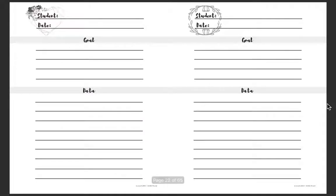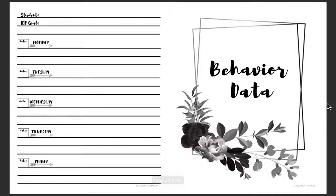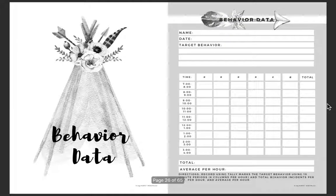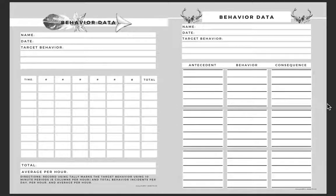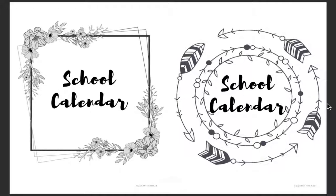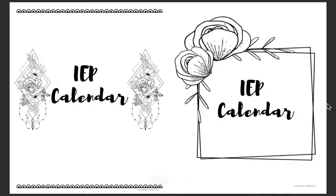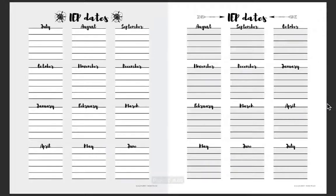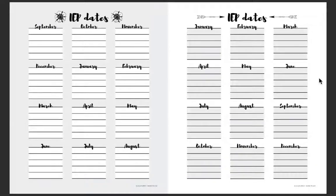There are data sheet templates for you to use, more data sheet templates, behavior data, behavior data templates, an antecedent-behavior-consequence page, a work samples cover, a school calendar, and an IEP calendar with IEP dates calendar templates depending on what month your school starts or how you like to organize it.